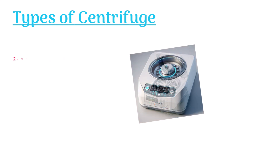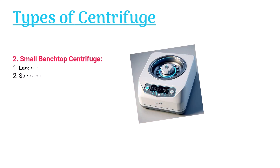The small bench top centrifuge is larger and faster than the micro centrifuge. It can rotate at a pace of up to 18,000 rpm.